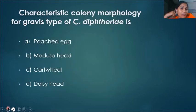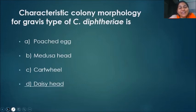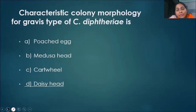The characteristic colony for the gravis type of Corynebacterium diphtheriae: Medusa head is for Bacillus anthracis. For C. diphtheriae colony morphology — gravis is daisy head, intermediate is frog egg, and mitis is poached egg.